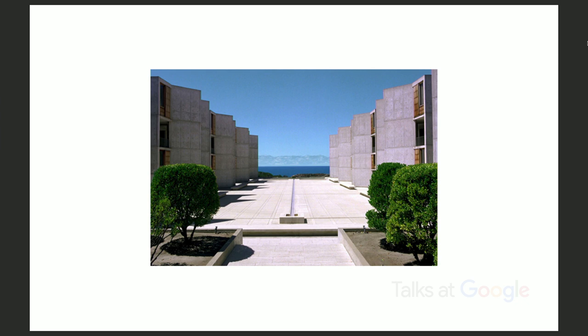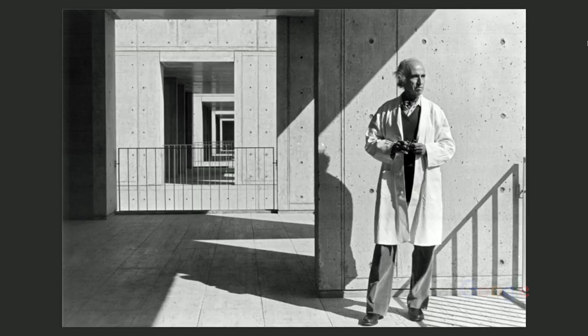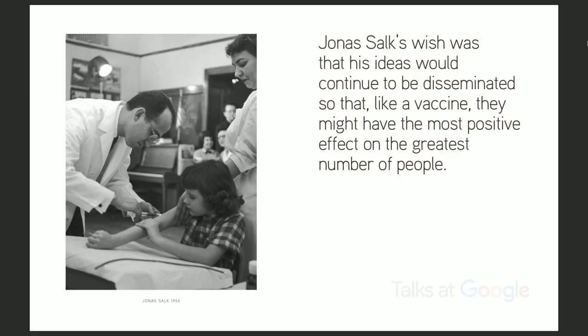My father developed the first effective vaccine against polio in the 1950s. In the 1960s, he went on to found and help design the Salk Institute for Biological Studies, a renowned research institution, and also, as it turns out, one of the architectural masterpieces of the 20th century. What few people know is that he spent the last part of his life thinking about and trying to address human problems and bring the ideas of science to the greater issues of humankind. His wish was that his ideas be disseminated so that, like a vaccine, they could bring the greatest good to the greatest number of people. It's in that light and in that vein that I published the book, and I'm here to talk about it.